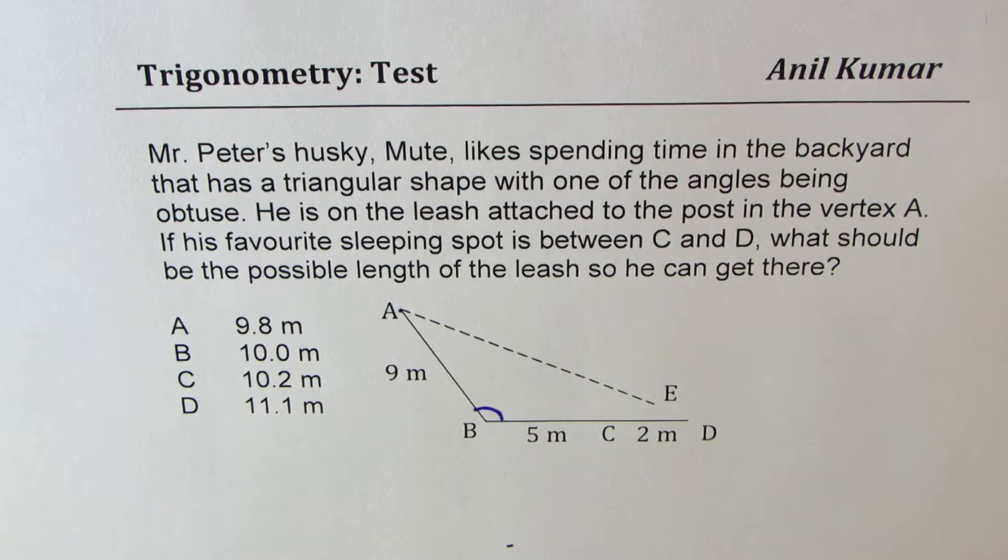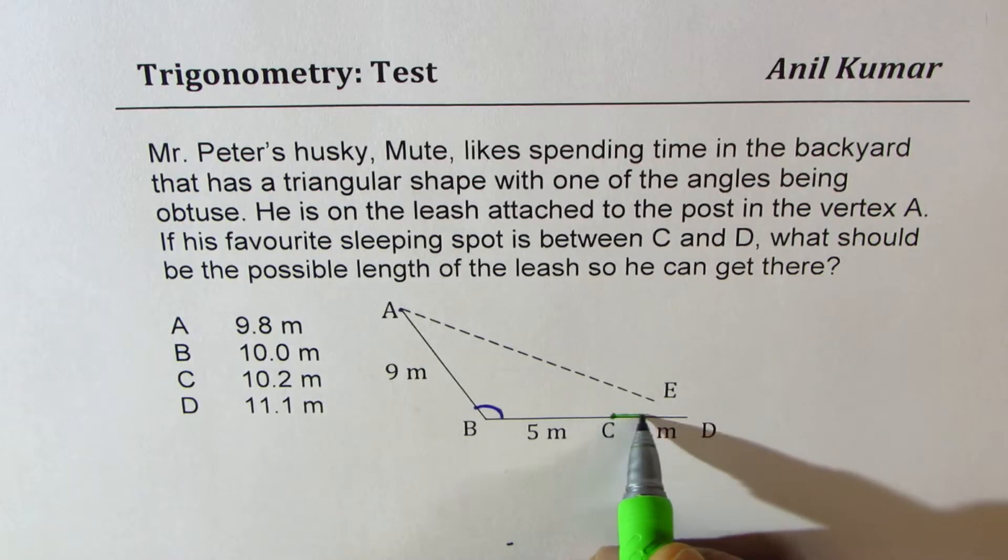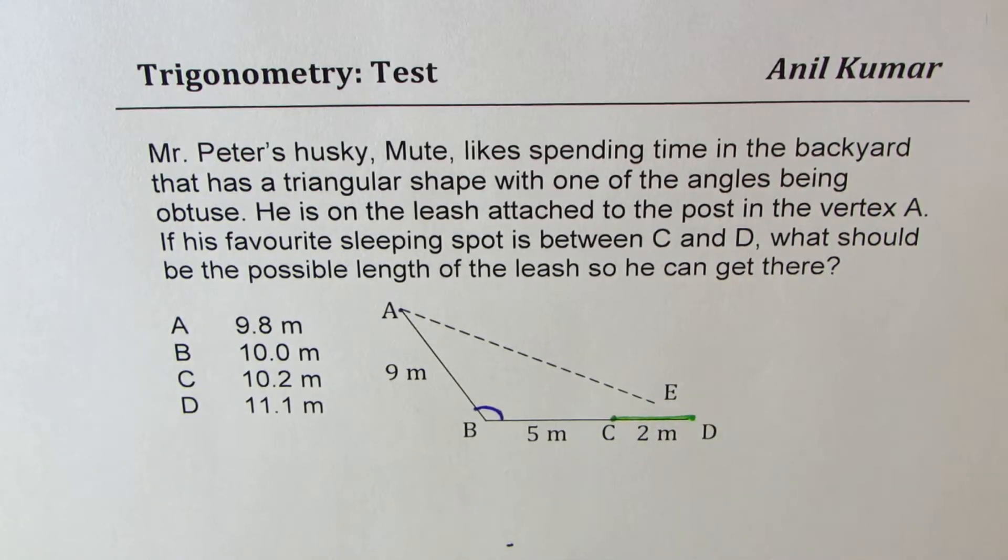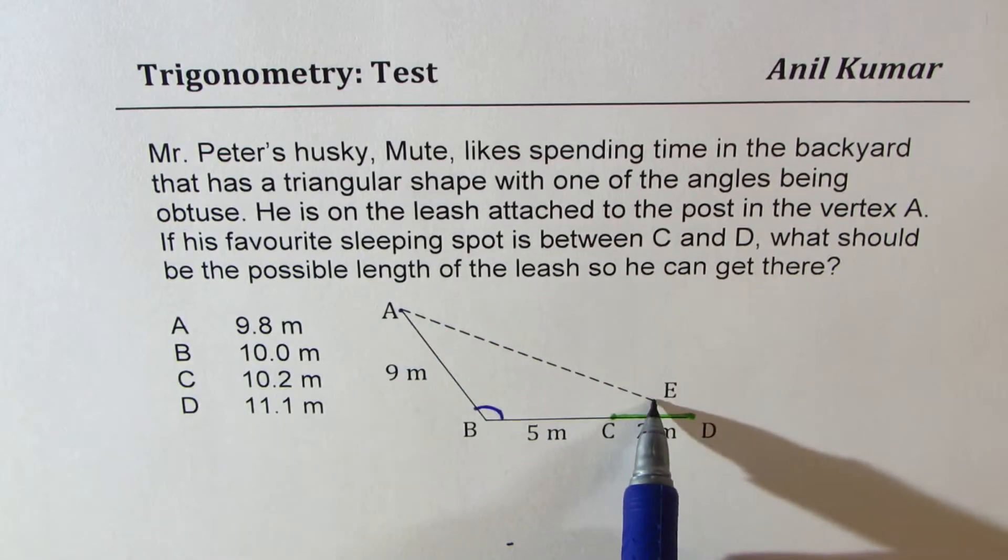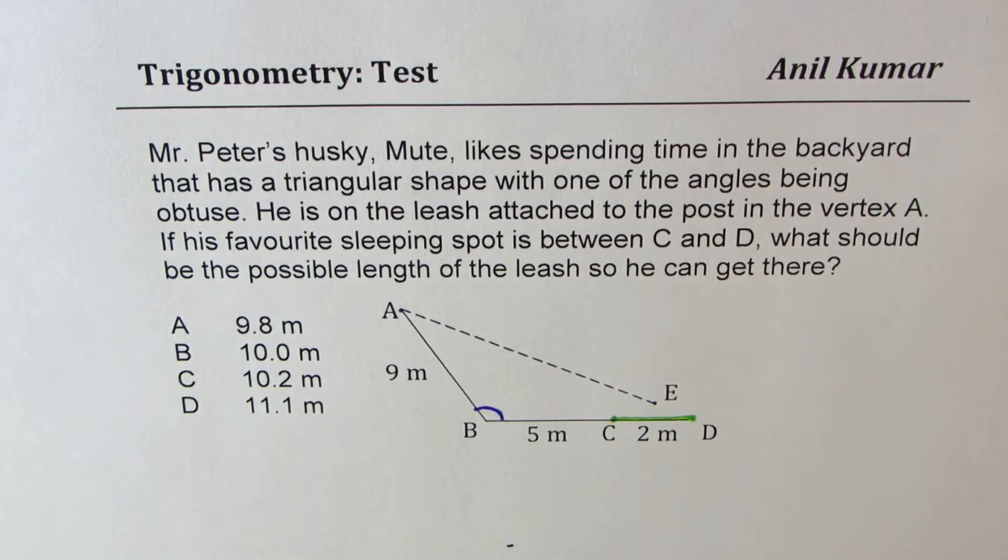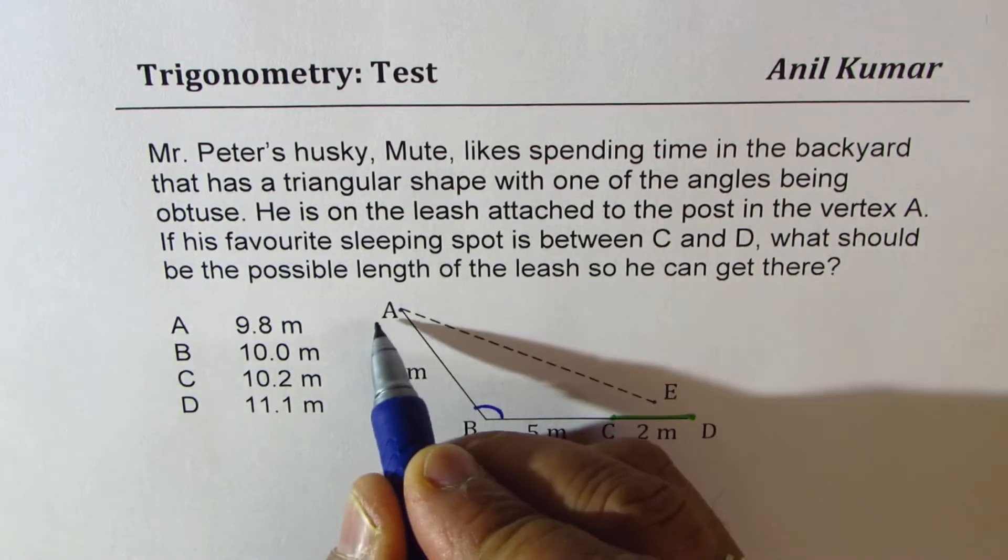If his favourite sleeping spot is between C and D, that means somewhere here, what should be the possible length of the leash so that he can get there? So we want the length AE.